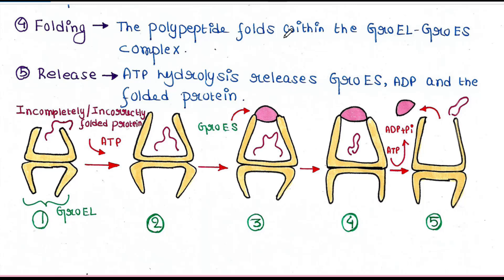The last step is release. The folding is done. Now ATP hydrolysis takes place, producing ADP and Pi. ADP, Pi, GroES, and the folded protein all release from the GroEL complex, and the protein folding is complete.